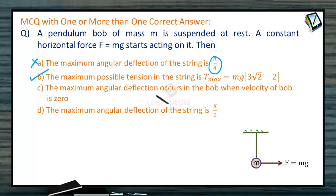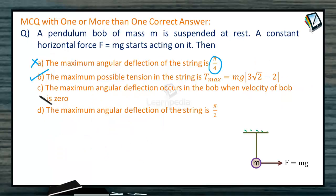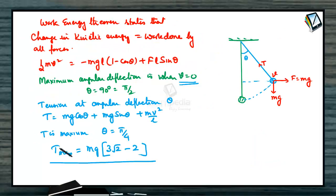Maximum angular deflection occurs in the bob when the velocity of the bob is 0. See maximum angular deflection is when velocity is 0 and theta is pi by 2. So this is also correct option. Maximum angular deflection of string is pi by 2. Correct option. So answer for this particular question will be B, C and D. So option B, C and D. These are the correct options.